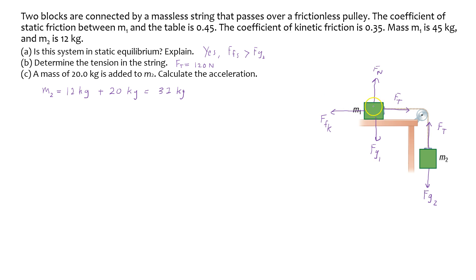For block one, this is the F_net statement we're going to have. Remember that F_net equals mass times acceleration. In this case, the mass is M1, so M1 multiplied by the acceleration equals Ft.